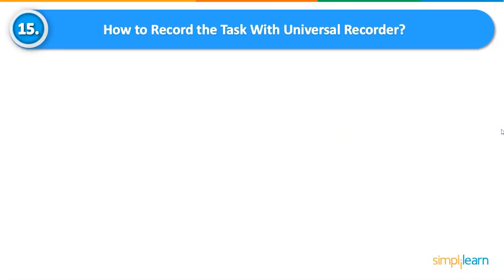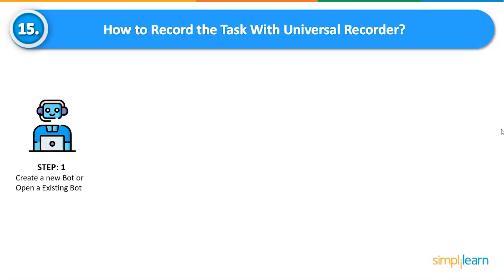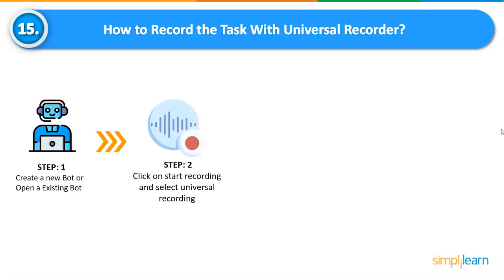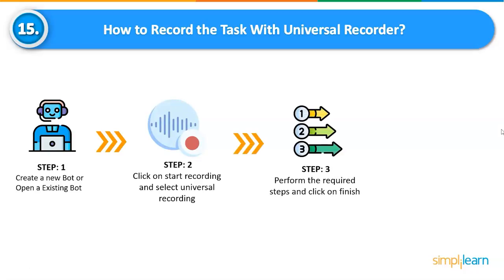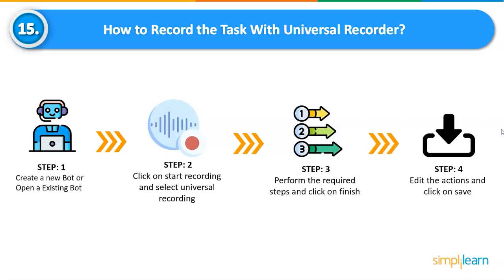How to record a task with Universal Recorder? Step 1: Create a new bot or open an existing bot. Step 2: Click on Start Recording and select Universal Recording. Step 3: Perform the required steps and click on Finish. Step 4: Edit the actions and click on Save.